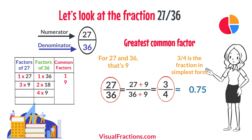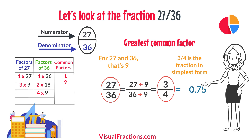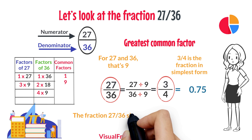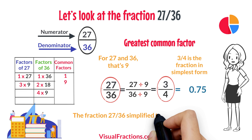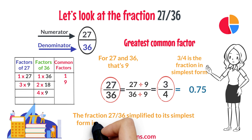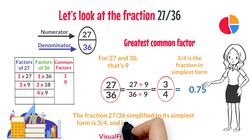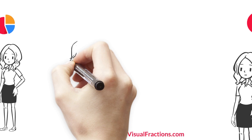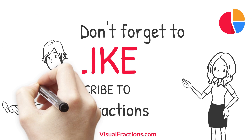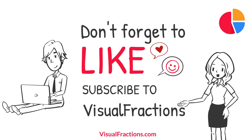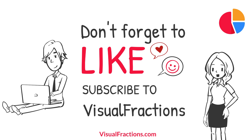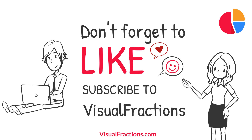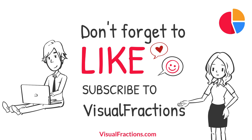So there you have it — the fraction 27/36 simplified to its simplest form is 3/4, and in decimal form it's 0.75. If you found this tutorial helpful, go ahead and smash that like button and don't forget to subscribe to Visual Fractions. Thanks for watching.